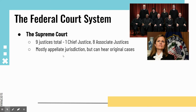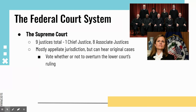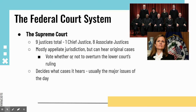Cases the Supreme Court reviews usually come from the circuit courts or from state Supreme Courts. Once the Supreme Court rules, that is the highest authority. The Supreme Court votes whether to overturn or uphold the lower court's ruling — that is appellate jurisdiction. The Supreme Court also decides what cases it hears, and usually these deal with major issues of the day. Right now, the Supreme Court is hearing things regarding the election, abortion, and whether rights were violated due to COVID.